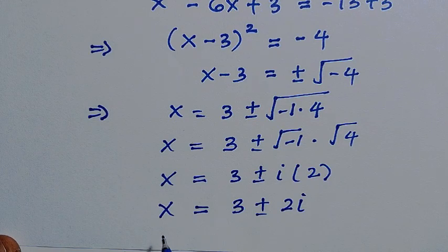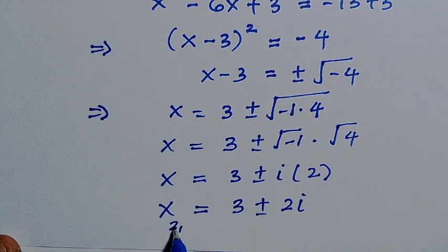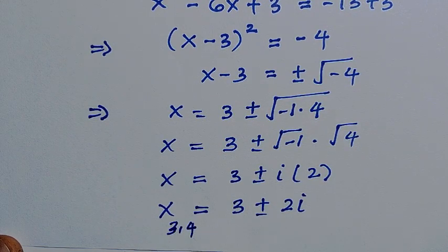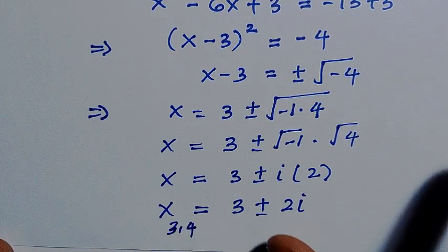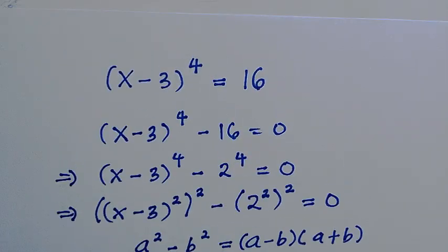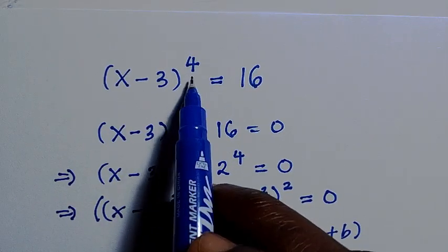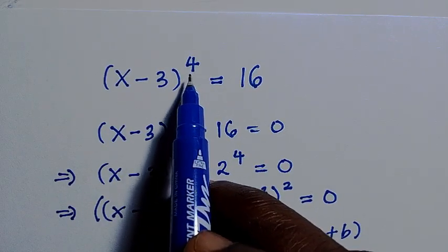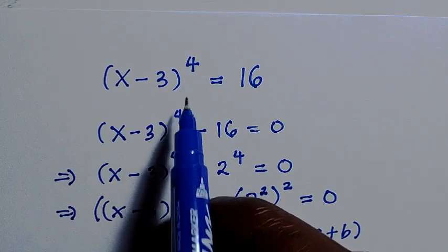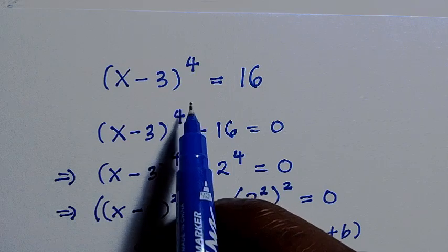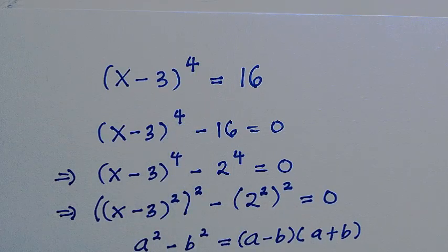These are the other two solutions — so we now have x₃ and x₄. The original equation was degree 4, so we expect exactly 4 solutions in total, and we have obtained all four.